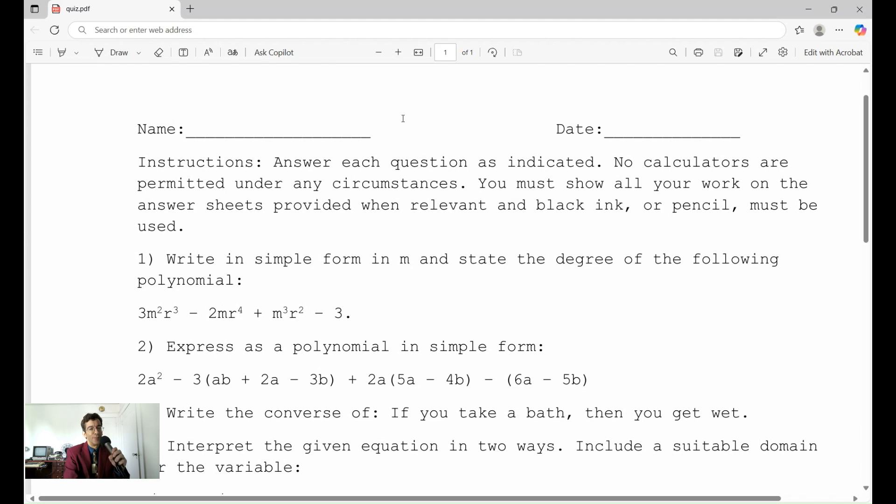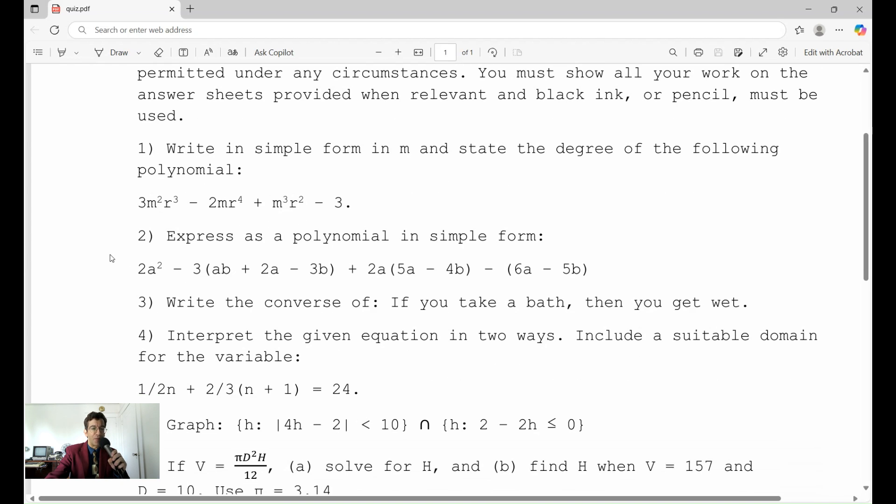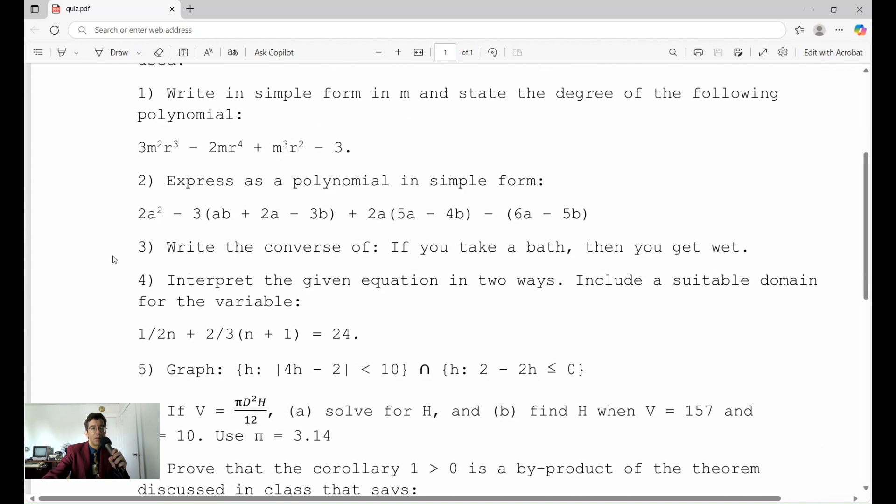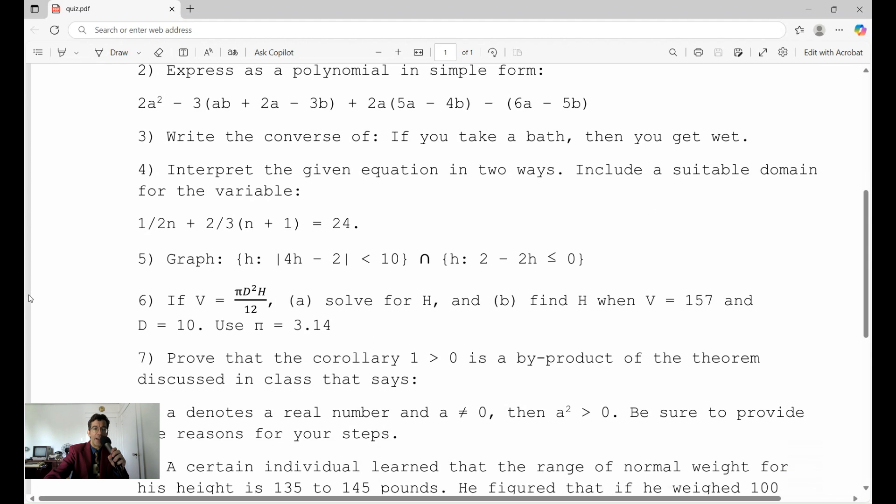The first question is you're going to write in simple form in M and state the degree of the following polynomial. The second question says express as a polynomial in simple form. Then number three, you have a converse. You are to write the converse statement. Number four, you have interpret the given equation in two ways. And then it says include a suitable domain for the variable. Again, for context, this is chapter two. Usually we give quizzes after every chapter. So this would be the beginning of algebra two, basically. If these questions are easy for you, then that's a good sign. If they're not easy for you and you are in algebra two, then you should really reconsider being in algebra two at this point.